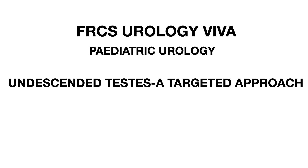Undescended testis or cryptorchidism is the incomplete descent of the testis from the abdomen through the inguinal canal and failure to descend into the scrotum. About 80% of undescended testis are palpable, while 20% are impalpable.